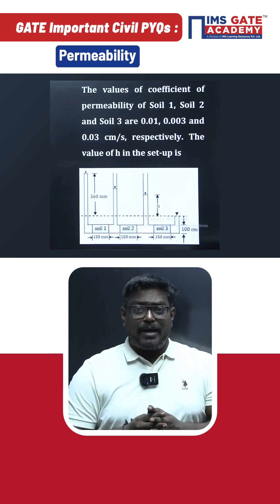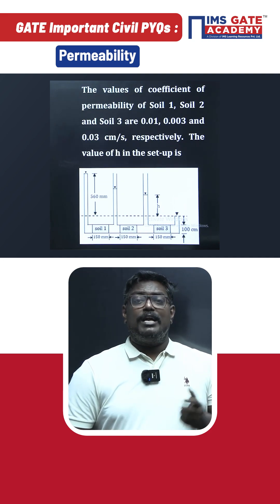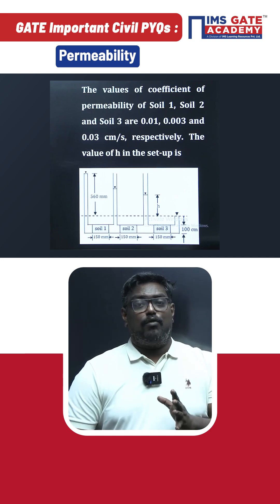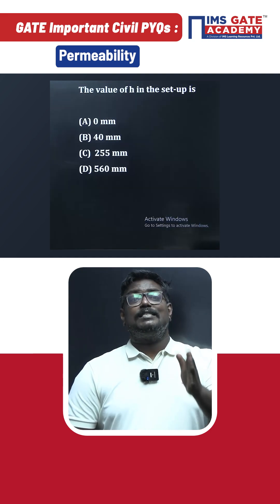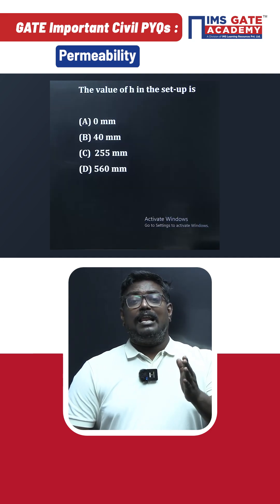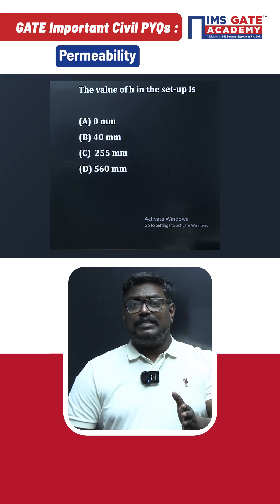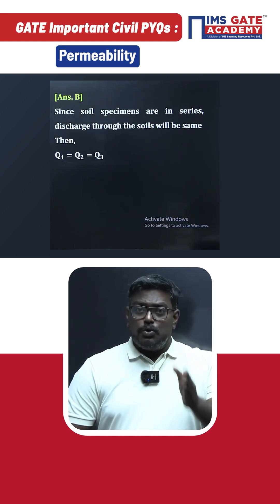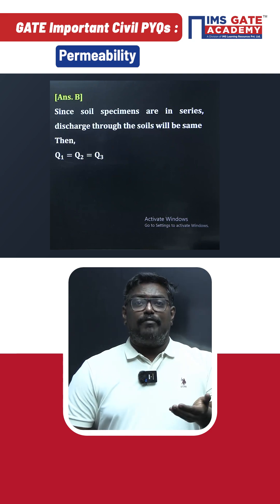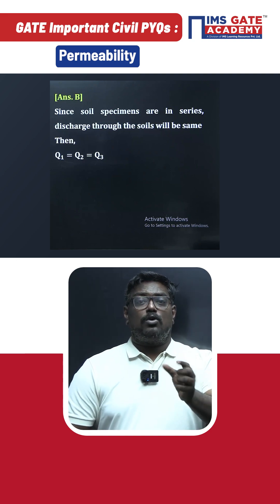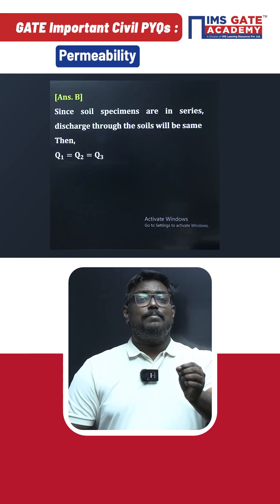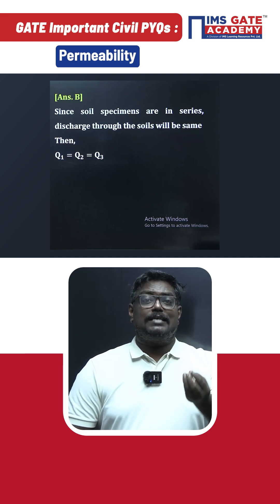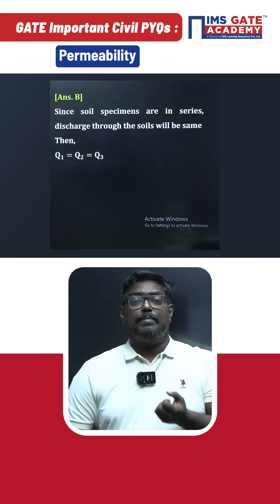Now in this problem, by looking into the configuration, it is clearly a vertical flow. That means the discharge is the same — the discharge in each specimen is the same. You already know the formula for discharge: according to the constant head test, it is area into velocity, where velocity equals hydraulic gradient into permeability.